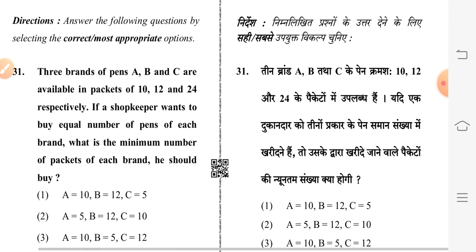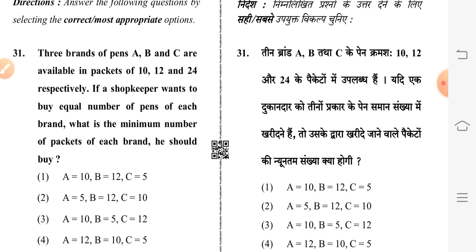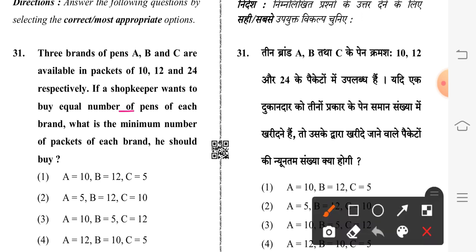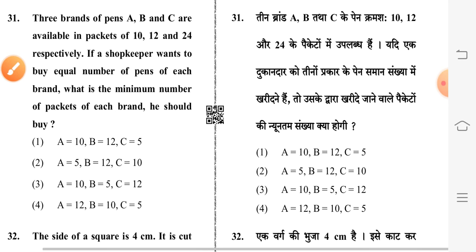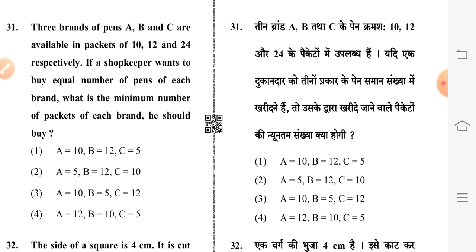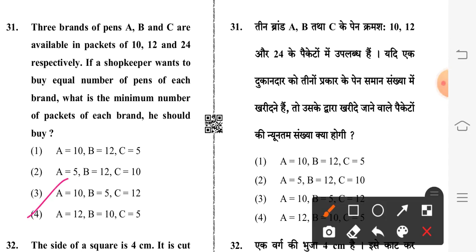Question 31: three brands of pens A, B, C are available in packets of 10, 12, and 24 respectively. A shopkeeper wants to buy an equal number of pens of each brand. What is the minimum number of packets of each brand he should buy? Fourth option is correct: A equals 12, B equals 10, C equals 5.